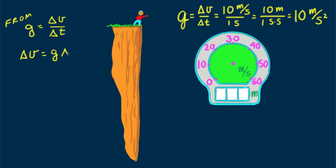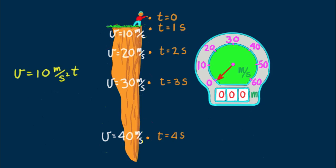From g equals delta v per delta t, we can say that delta v equals g delta t, or simply v equals gt, which reads: The speed gained in an interval of time t is equal to the acceleration times that time t. Since g equals 10 meters per second squared, we can write speed gained as v equals 10 meters per second squared times t. Notice how this equation accounts for the speed readings.